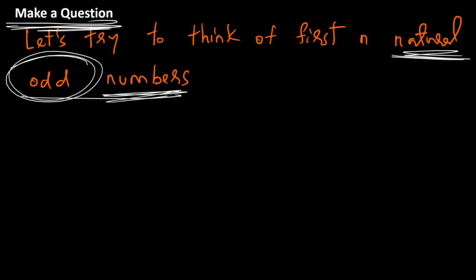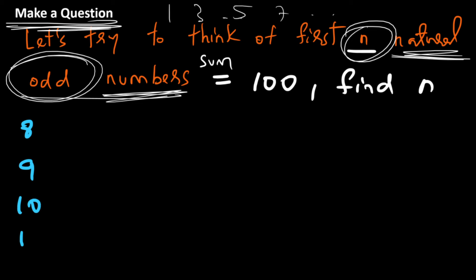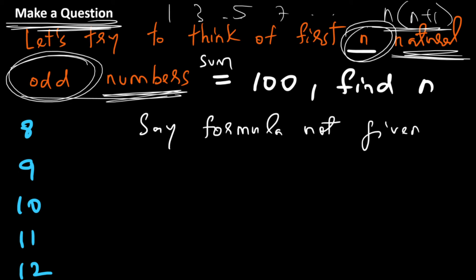Let's say the question states: if you take the first n natural odd numbers — 1, 3, 5, 7, and so on — the sum is 100, and you're asked to find the value of n. The options are 8, 9, 10, 11, and 12. Unlike the previous question, the formula is not given this time, so we have to look at the pattern and derive the formula first.